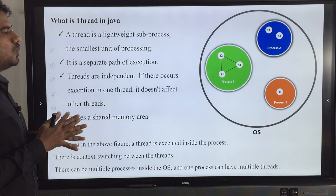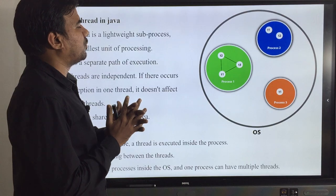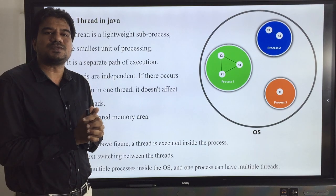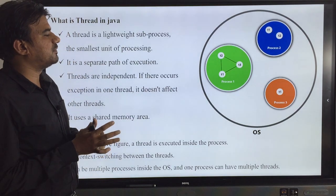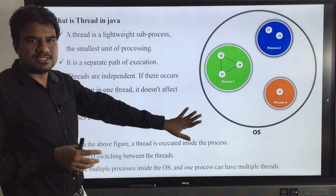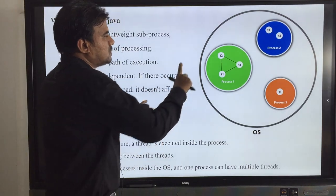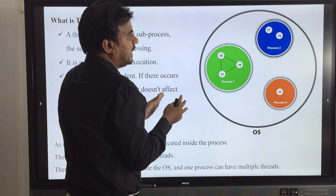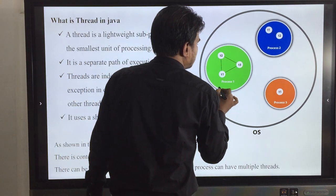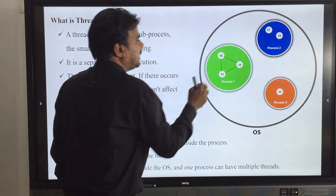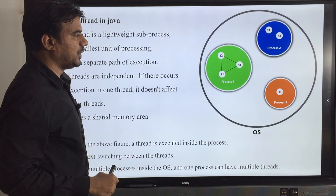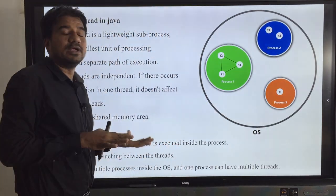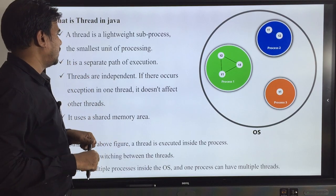What is a thread in Java programming? In our complete operating system we have a lot of processes running. For instance, I have taken around three processes here. We show processes with circles in this picture and each process can be subdivided into a number of threads. Process P1 is subdivided into three threads: T1, T2, and T3. Process P2 is subdivided into two threads, and process P3 is executing as a single thread.